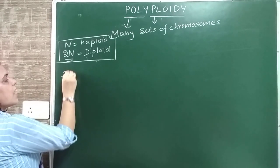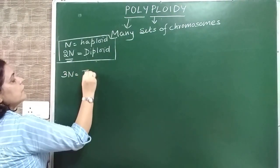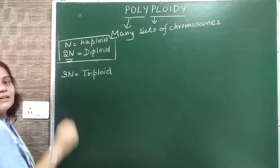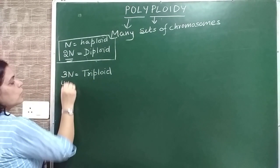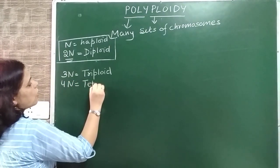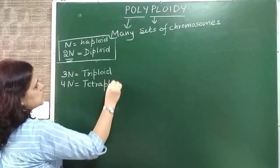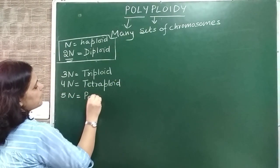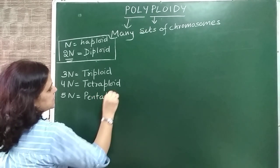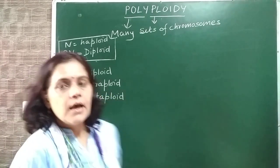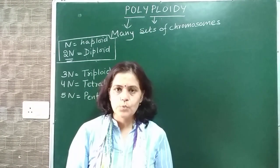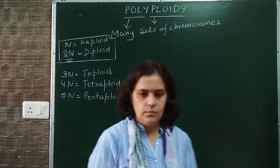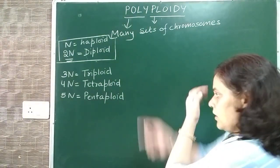In polyploidy, if there are three sets of chromosomes, we call it triploidy. If there are four sets of chromosomes, we call it tetraploidy. Five sets is pentaploid (5N), six sets is hexaploid (6N), seven sets is heptaploid (7N), eight sets is octaploid (8N), and so on.